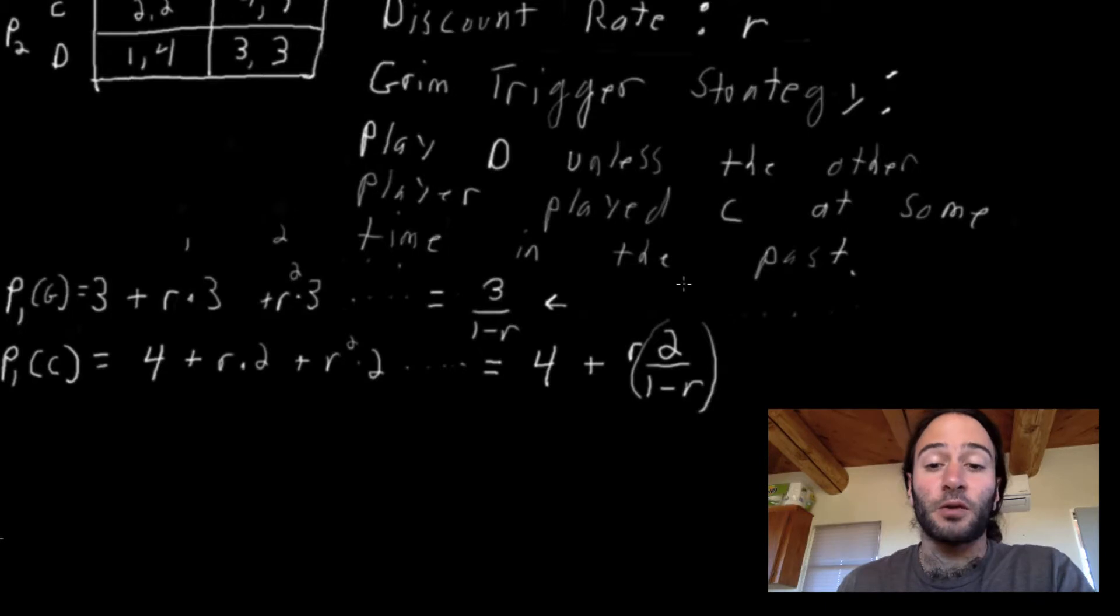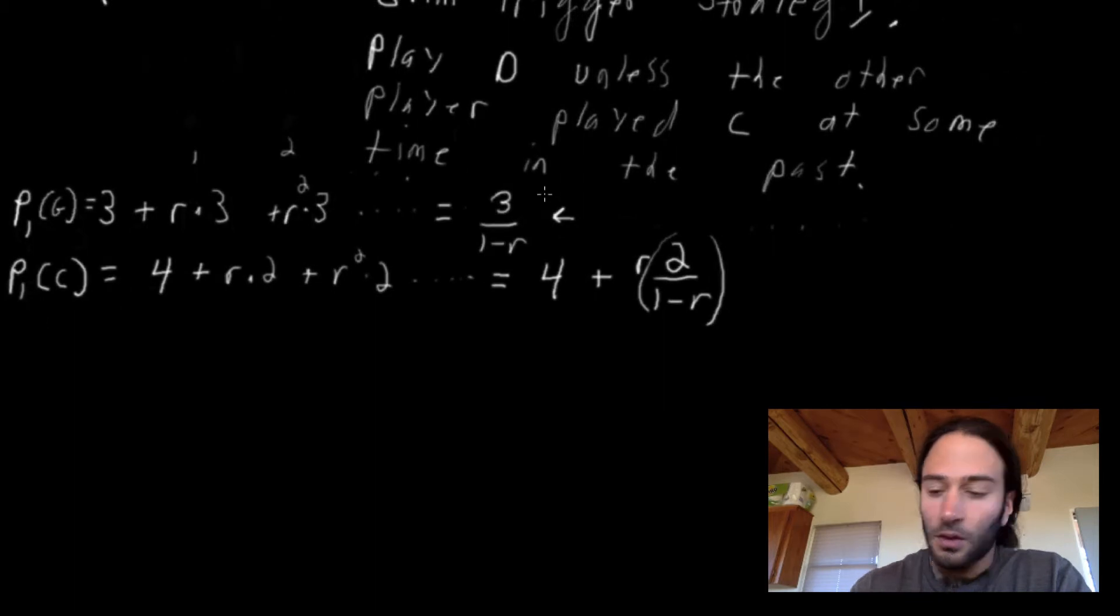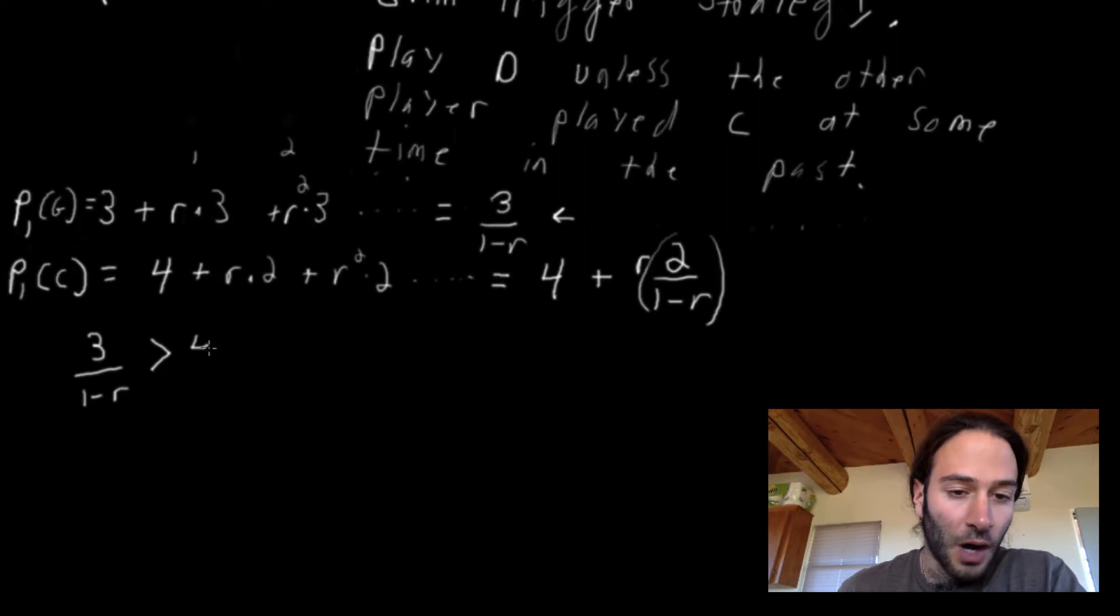So if player two is playing grim trigger, what should player one do? Well, player one will only consider two strategies here. He can either also play grim trigger, or he can confess. Which one is better? When is it better for him to also play grim trigger? Well, this must be better than him confessing. Three over one minus r must be greater than four plus two r over one minus r. So we have an inequality here. This is the condition where grim trigger is better.